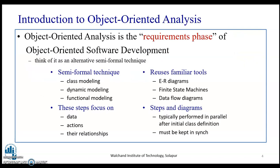Object-oriented analysis is the requirement phase of object-oriented software development. We can think of it as an alternative semi-formal technique. In the semi-formal technique, we use familiar tools like the ER diagram, the finite state machine, and the data flow diagram. The steps and diagrams are typically performed in parallel after the initial class definition, and these steps focus on data, action, and relationship.